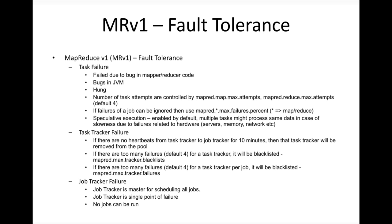Irrespective of the reason, what MapReduce will do is try to restart the same task up to four times, each attempt on a different node. The reason it tries different nodes is to ensure there are no hardware failures — hardware failures on four different nodes at the same time is highly unlikely. So restarting on four different nodes rules out hardware as the cause. If after the fourth attempt the task is still failing, it will fail the entire job and abruptly stop it.